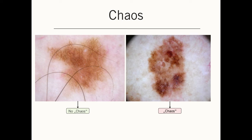On the right-hand side, you have a melanoma, and this is chaotic. It has multiple colors that are asymmetric, and multiple patterns that are asymmetric. You will already recognize that this is a very easy decision — the human eye is already trained to recognize a break in the pattern of biologic symmetry.